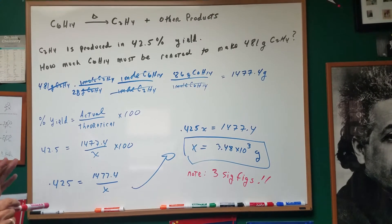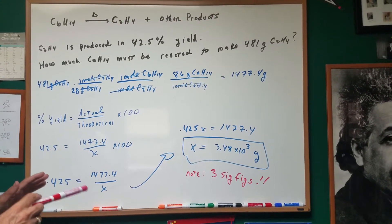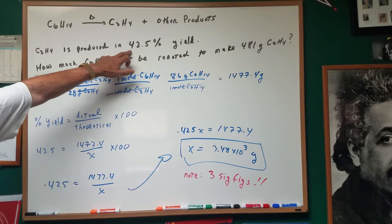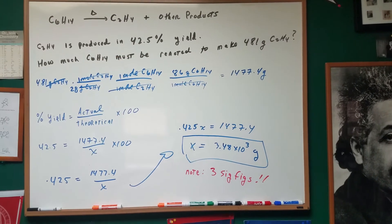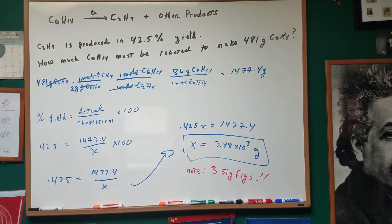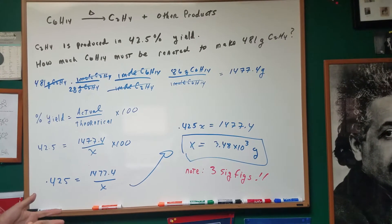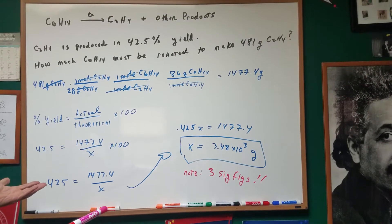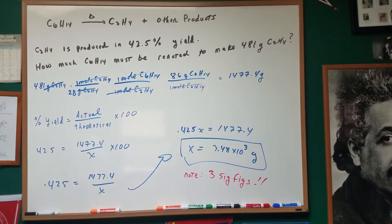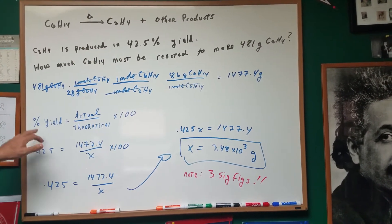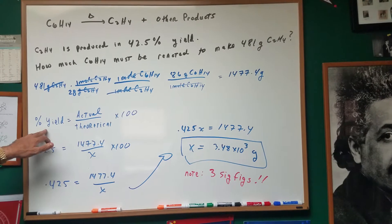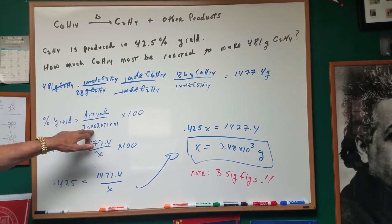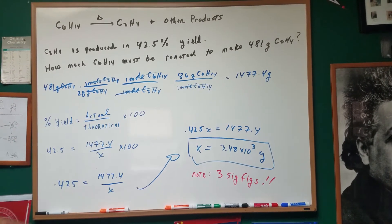Now we're not done yet. Normally we would be done, but it says that we only produced it in 42.5% yield. Normally on these types of problems we assume 100% yield, but here I'm giving you a percent yield. The percent yield is the actual over the theoretical times 100.